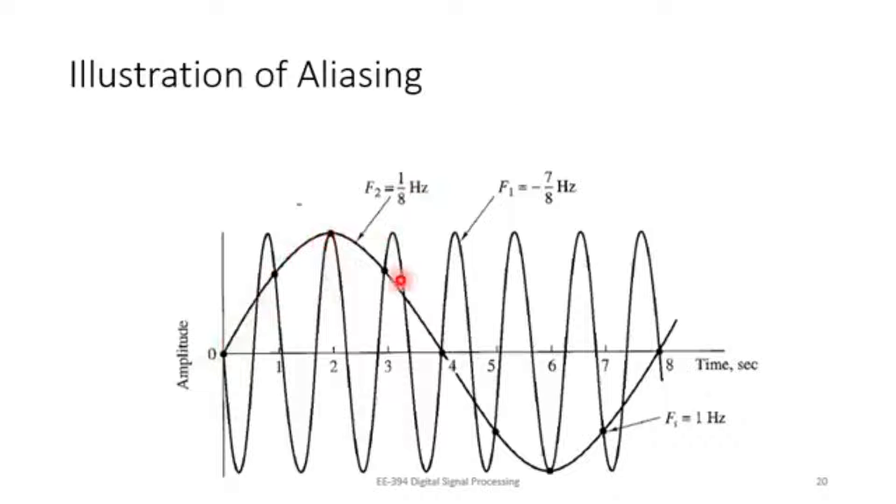Here in the bold black, there are two signals. This signal which is of lower frequency is 1 upon 8 hertz, F2. And this signal which is of a higher frequency with more rate of oscillation is F1 as minus 7 by 8 hertz. Now these are two different signals in continuous time. Let's say we want to sample both of these signals with a sampling frequency of 1 hertz. 1 hertz means one sample per second.